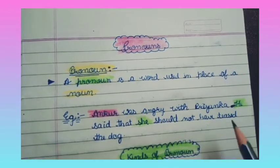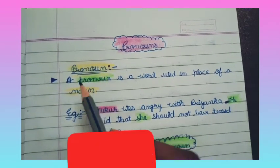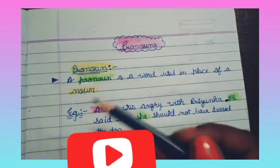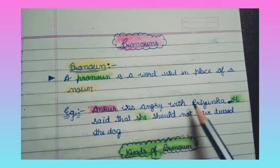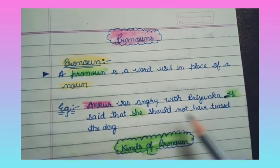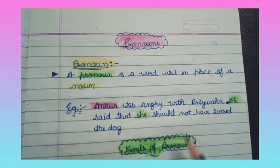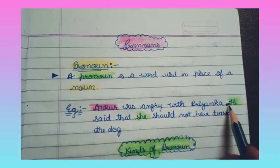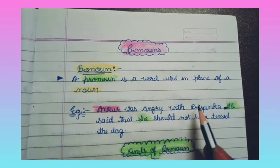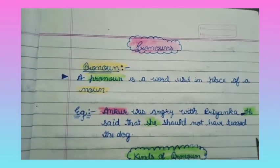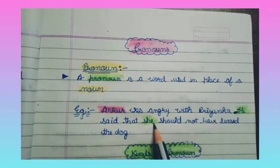When we use any word in the place of a noun, it is known as a pronoun. For example: 'Ankur was angry with Priyanka. He said that she should not have teased the dog.' Here we are using 'he' in place of Ankur and 'she' in place of Priyanka, so both are pronouns.